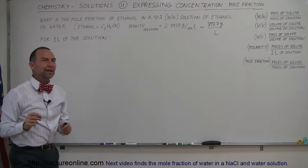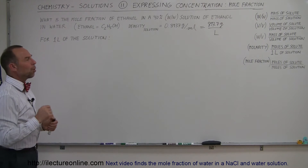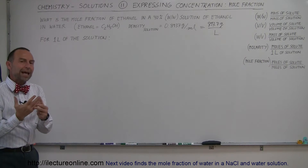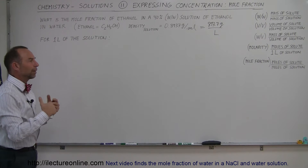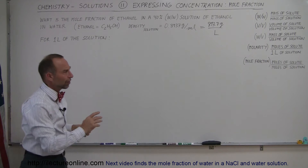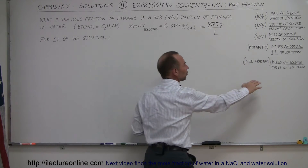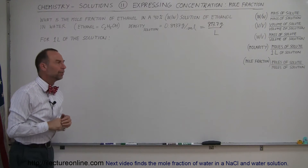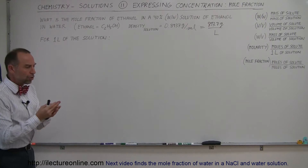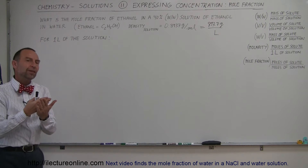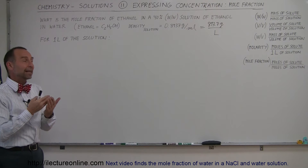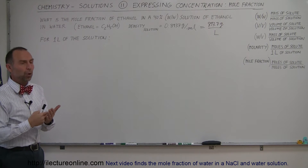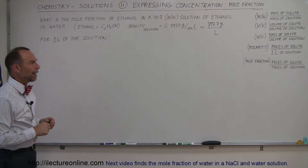If we're trying to find the number of moles of the solution, we need to know how many grams of ethanol we have — we're looking first for the moles of the solute, the moles of the ethanol. To do that, we need to know how many grams of ethanol we have, and then divide that by the number of grams per mole, by the molar mass.